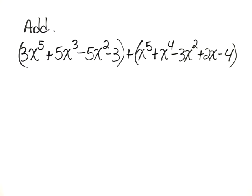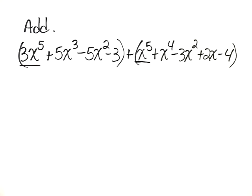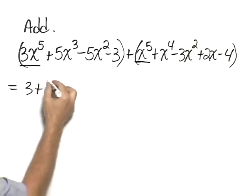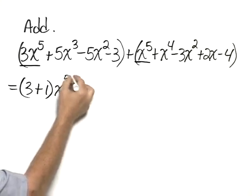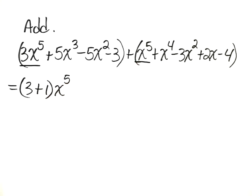Add 3x to the 5th plus 5x cubed minus 5x squared minus 3 plus x to the 5th plus x to the 4th minus 3x squared plus 2x minus 4. We begin by combining and adding together 3x to the 5th plus x to the 5th, so 3 plus 1 times x to the 5th, the 1 being the understood coefficient of the x to the 5th term.